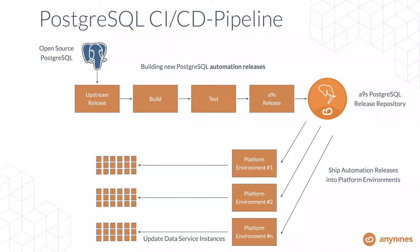Once quality assurance is complete, we've created an Any9s Postgres release located at a repository. The second part of the delivery pipeline picks up these tested releases and deploys them into actual platform environments. Client environments watch the Any9s Postgres release repository, download releases into staging or test environments, run tests there—which closes the gap between our infrastructure and the customer's infrastructure—and then qualify releases for production. I highly recommend having such a continuous delivery pipeline for Postgres automation.